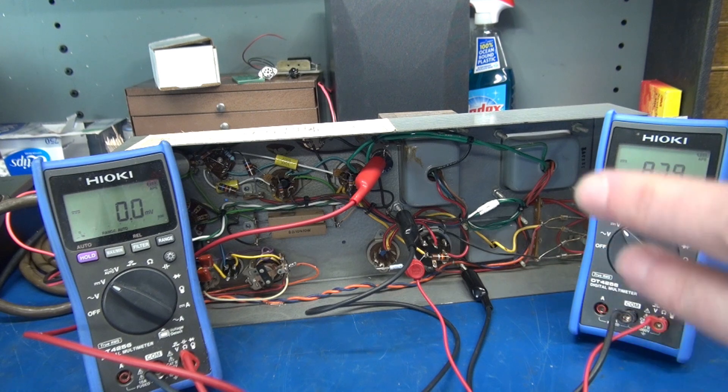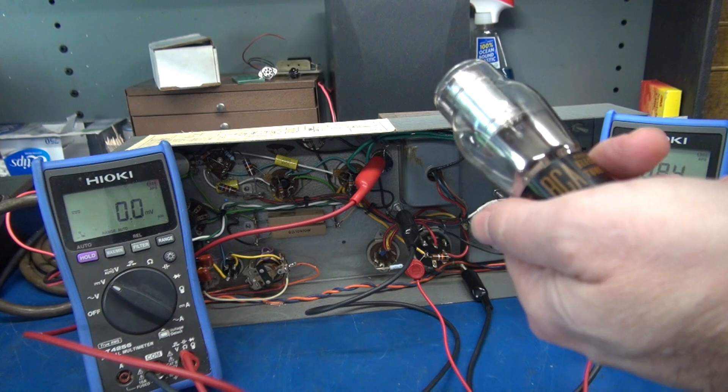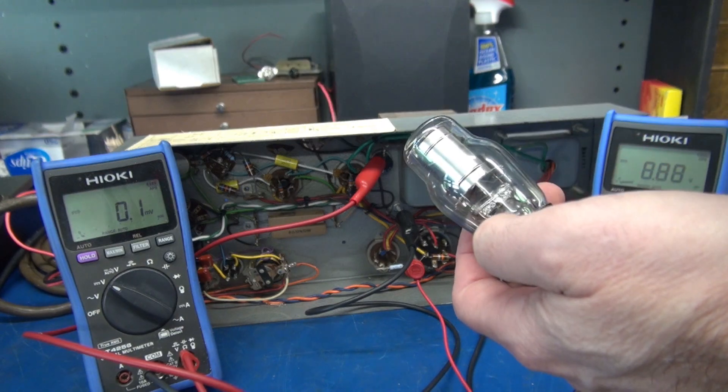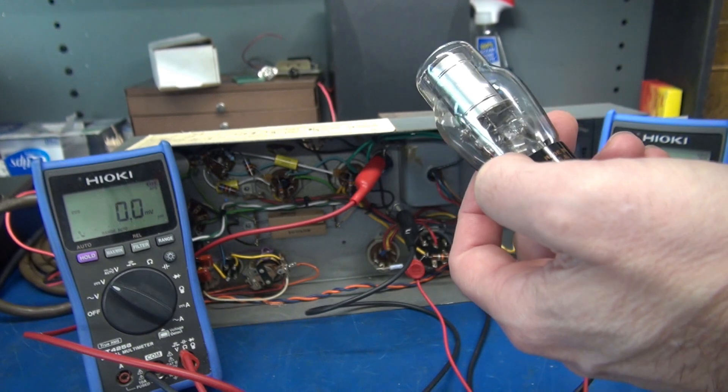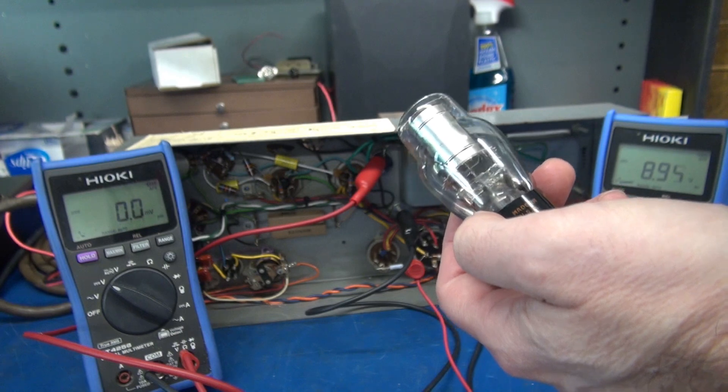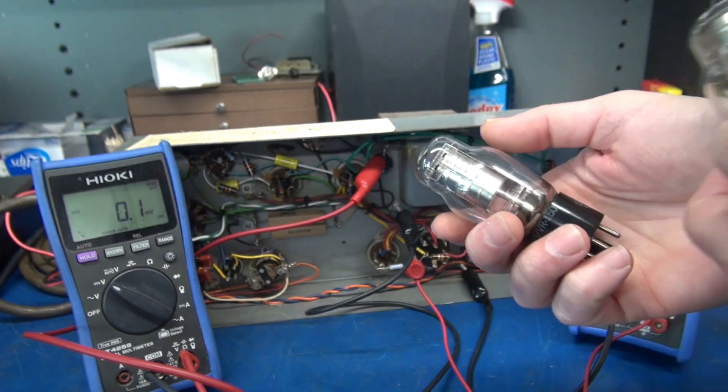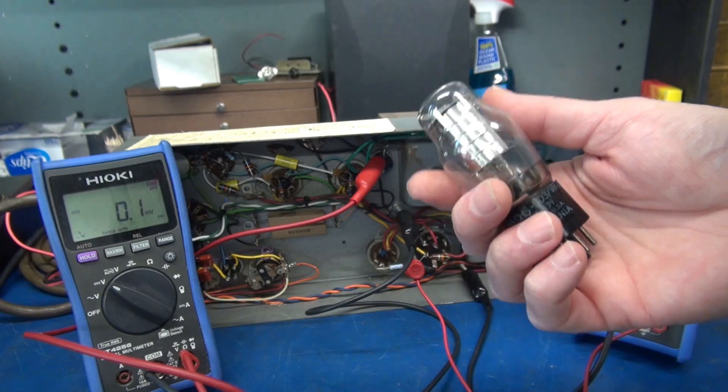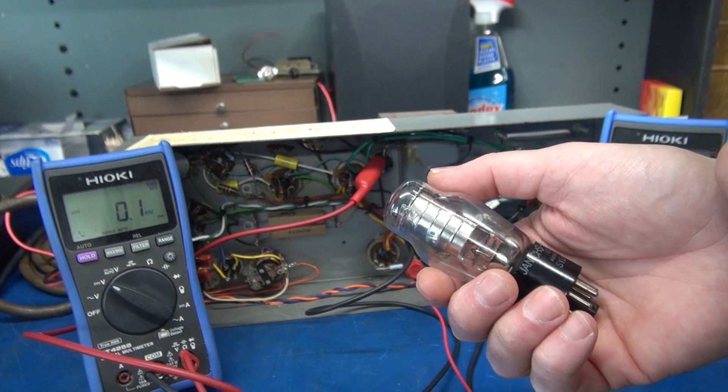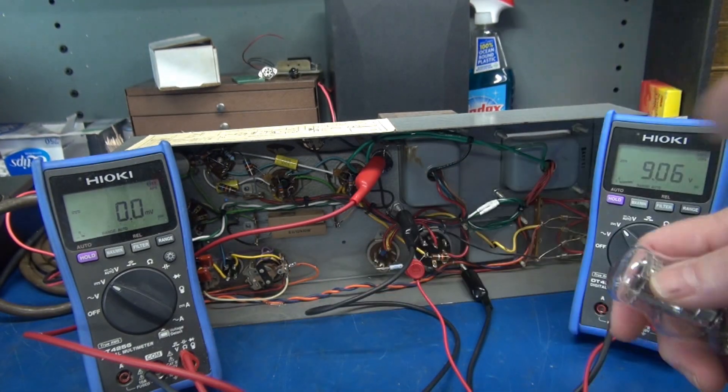Since the amplifier had no adjustments and the OC3 was doing all the work of regulating the screen voltage, I thought what I need to do is drop more voltage but regulate it. Remember the OC3 is 105 volts but an OD3 is 150 volts. I'm going to go ahead and pop in an OD3 and see what happens to my voltage levels.